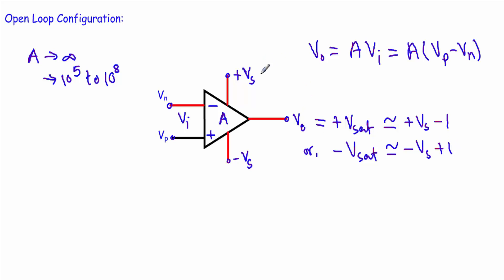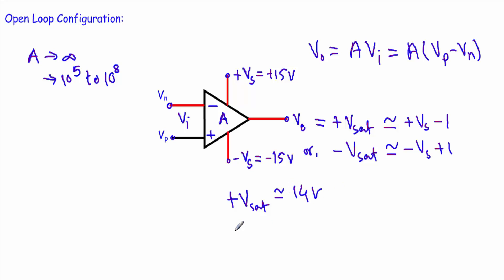For example, if we bias the operational amplifier with a positive supply of +15V and a negative supply of −15V, then in open-loop connection, the positive saturation voltage will be +14V and the negative saturation voltage will be −14V. This confirms that the saturation voltage is slightly lower than the bias voltage.